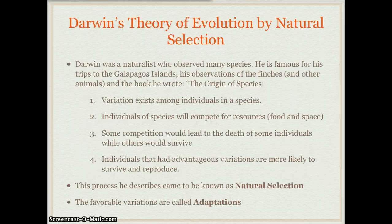After Lamarck came a scientist called Charles Darwin, and he is the big figure in evolution. We'll talk about his theory of evolution by natural selection — natural selection is really Darwin's key concept. Darwin was a naturalist, or a scientist who studied nature, and he observed many species.